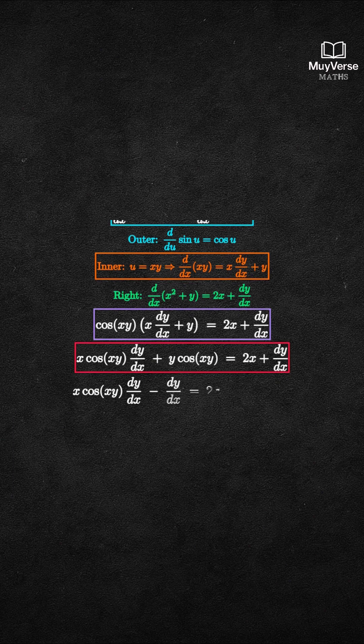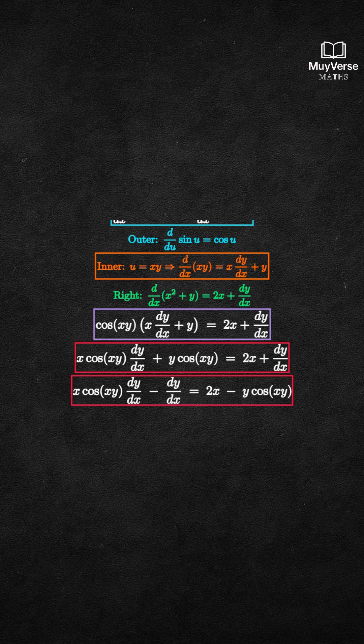Bring all dy/dx terms to the left and constants to the right. x cosine of xy dy/dx minus dy/dx equals 2x minus y cosine of xy.